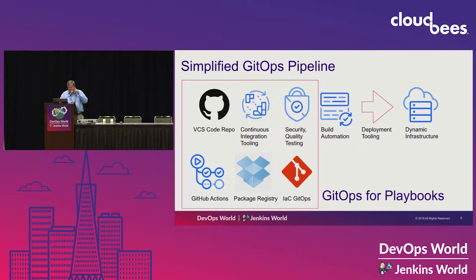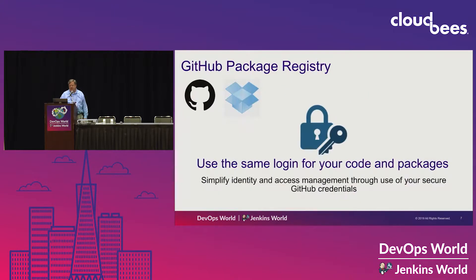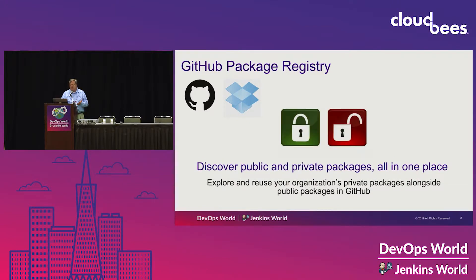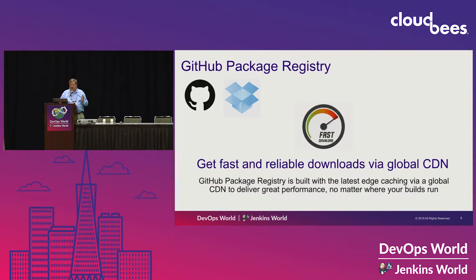When you have infrastructure as code, it adds that GitOps dimension to what's happening within the GitHub platform. The package registry value proposition: use the same login for your code and your packages, so you simplify your identity and access management. Discover public and private packages all in one place, whether they're consumed internally or you're part of an open source project. Get fast and reliable downloads via our global CDN.